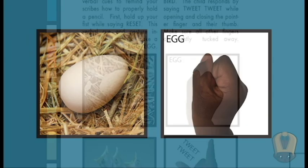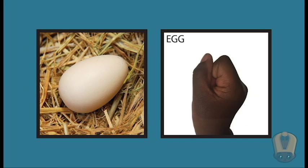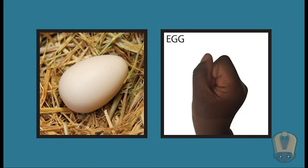We've developed a simple system of gestures and verbal cues to remind young learners how to properly hold a pencil. First hold up your fist while saying reset. This verbal cue and gesture instructs the child to make a fist while saying egg egg.